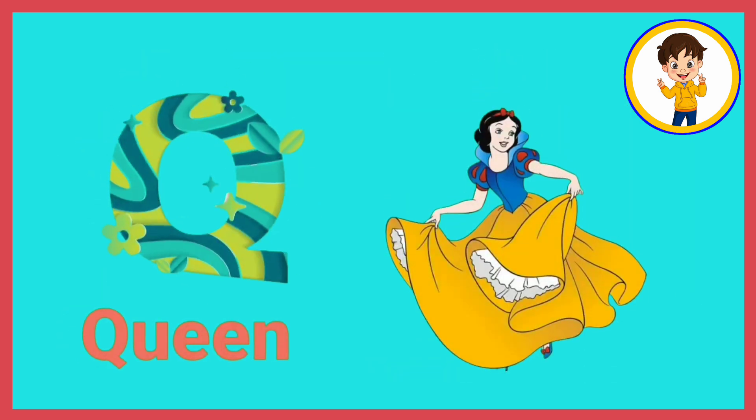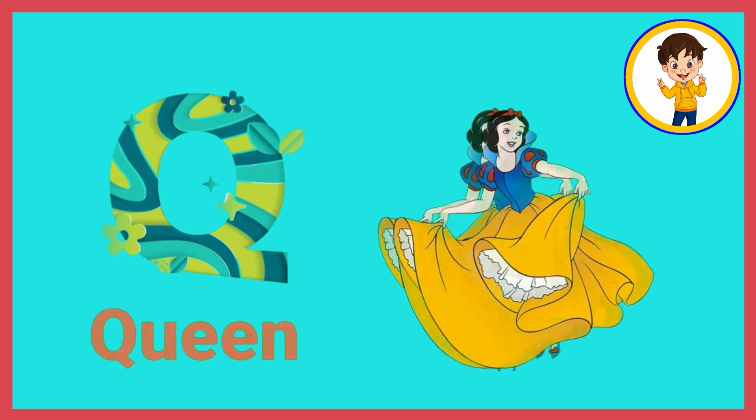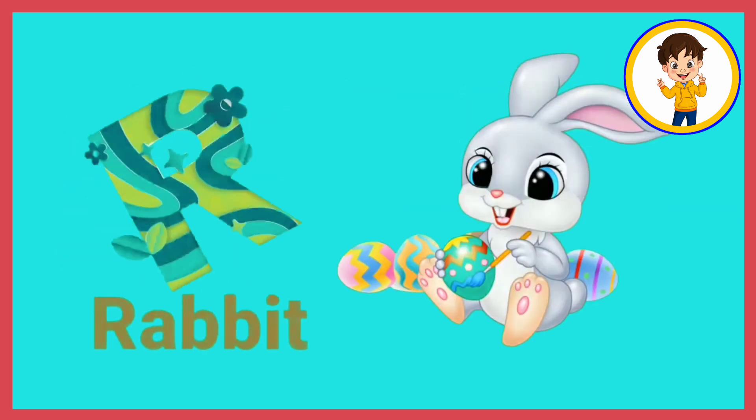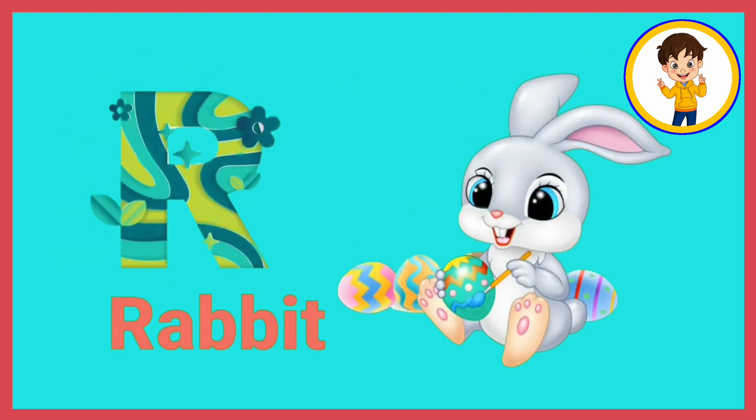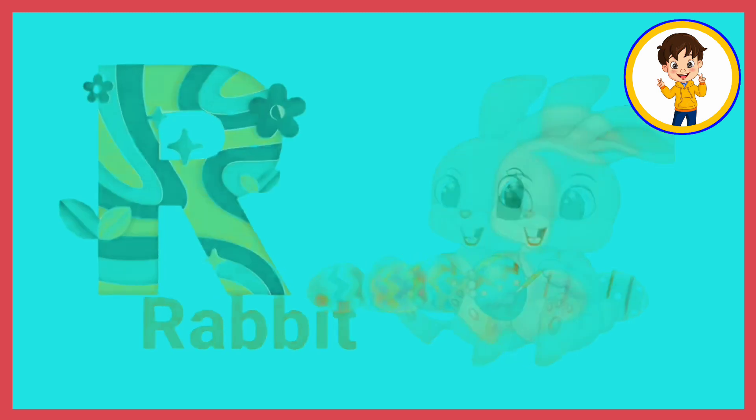Q. Q for queen. Queen means nani. R. R for rabbit. Rabbit means khangosh.